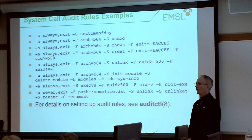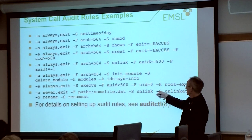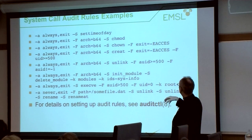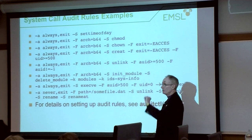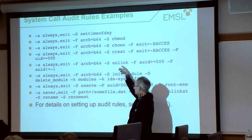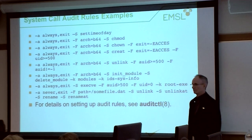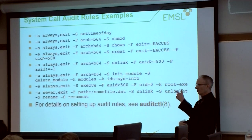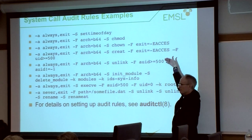To clarify: that 'never' rule would need to be placed before the general unlink rule in the file, because first match wins. As a general rule, with any first-match-wins policy, you want to go from specific to general — put your 'never' or more specific rules before your broader 'always' rules to avoid rule shadowing.